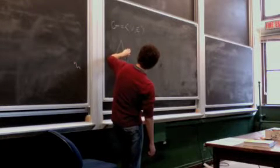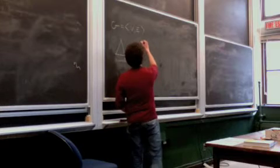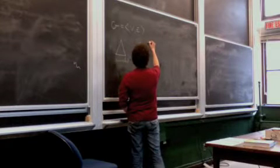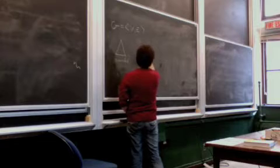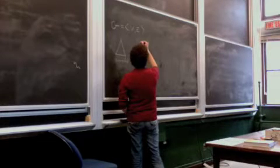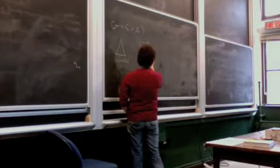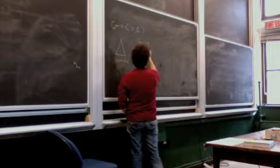A little more interestingly, a complete graph on n vertices simply means a graph in which vertices are mutually adjacent. So any pair of vertices is connected by an edge.